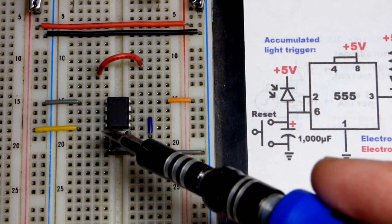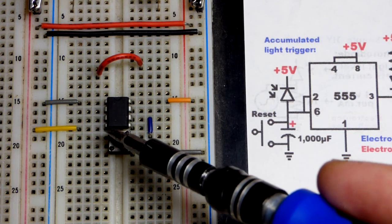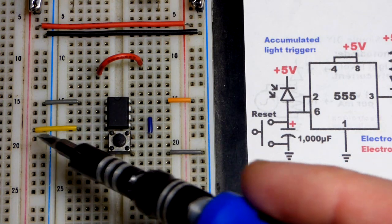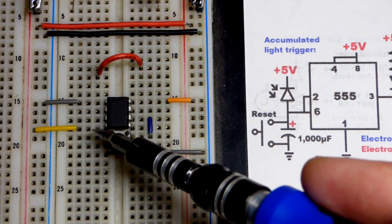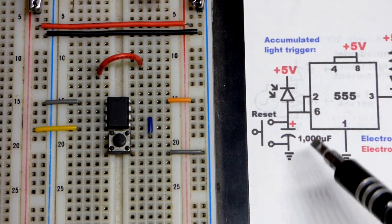Also we have pin 4. So a low input to pin 4, basically 0 volts, will set the output low and hold it there no matter what. So we're going to the positive supply, holding 5 volts. That makes sure it doesn't do anything—it won't reset it, so we got that there.